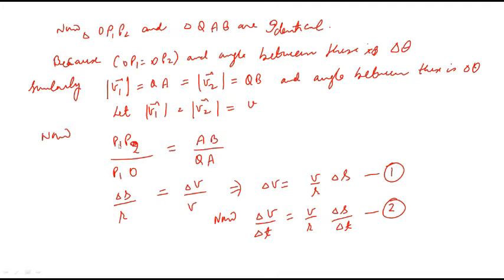Since these two triangles are identical, we can write P1P2 upon P1O equals AB upon QA. Let P1P2 equal delta s, P1O equal r, AB equal delta v representing the change in velocity, and QA equal v. So we can find the change in velocity in magnitude as delta v equals v upon r multiplied by delta s. Let us call this equation number 1.